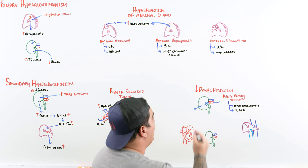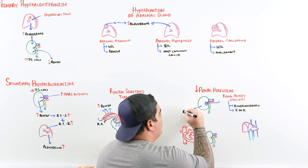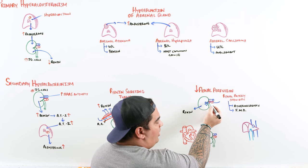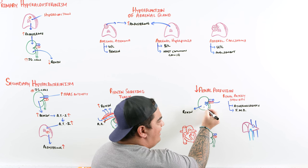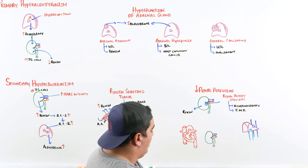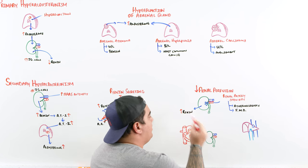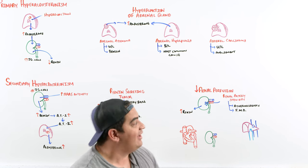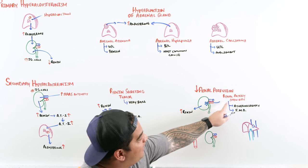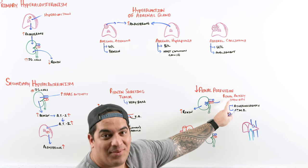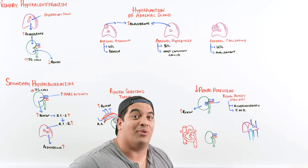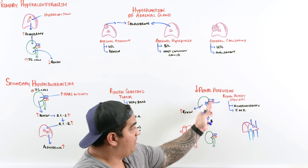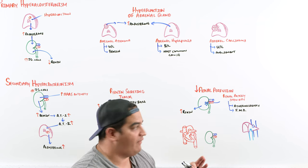The body releases renin to increase blood pressure and better perfuse the kidney. Oftentimes one of the key clinical findings with renal artery stenosis is really listening for a renal artery bruit that may be present because of the obstruction of the vessel.